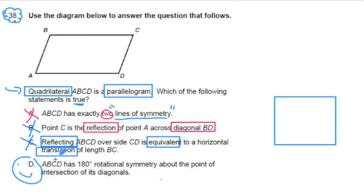It says quadrilateral ABCD has 180 degree rotational symmetry about the point of intersection of its diagonals. Look at all the phrases they use. And some of this stuff may be new, so you've got to practice it. 180 degree rotational symmetry about the point of intersection of its diagonals. So let's start with, we're going to talk about 180 degree rotational symmetry.